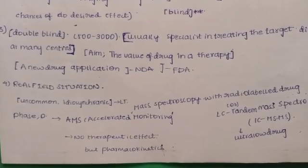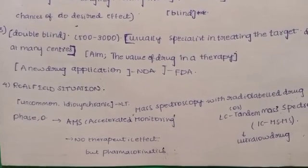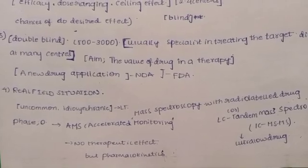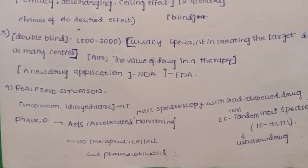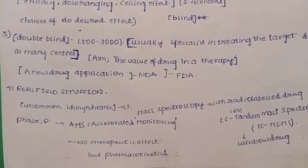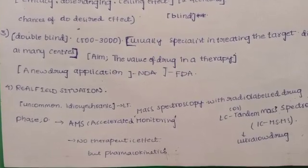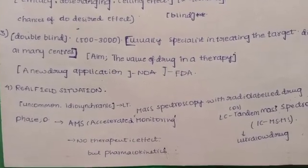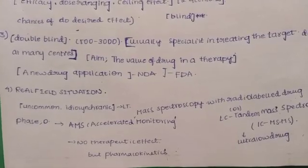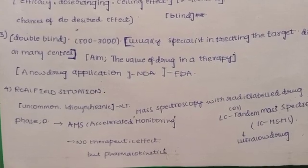In Phase 4, patients and persons continue long-term use. Unlike Phase 1 — where diabetic patients, renal patients, and hepatic patients were excluded — Phase 4 includes all such patient populations, including pregnant and lactating women, providing complete real-world information.